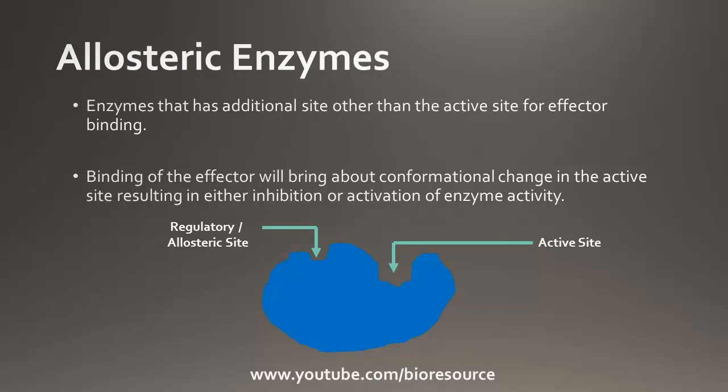The allosteric ligands are also known as effector molecules. The binding of the effector will bring about a conformational change in the active site, altering its catalytic or binding properties.